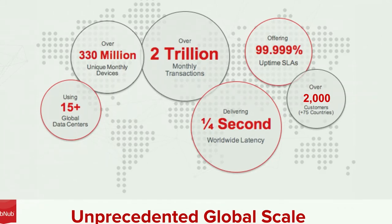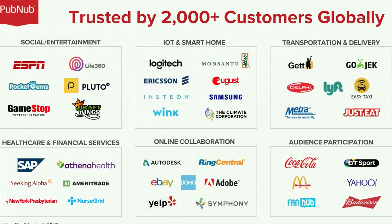To give you a scope and scale of where PubNub is today, we have around 330 million monthly devices connected to the PubNub network, sending over 2 trillion transactions within a quarter second. We're able to do this because we have around 15 points of presence all around the world, providing a five-nines SLA for our customers. Over 2,000 customers trust PubNub — we sit across 35 different industry verticals all around the world, from two-person startups to Fortune 500 companies, and this slide highlights some of our top use cases and customers.